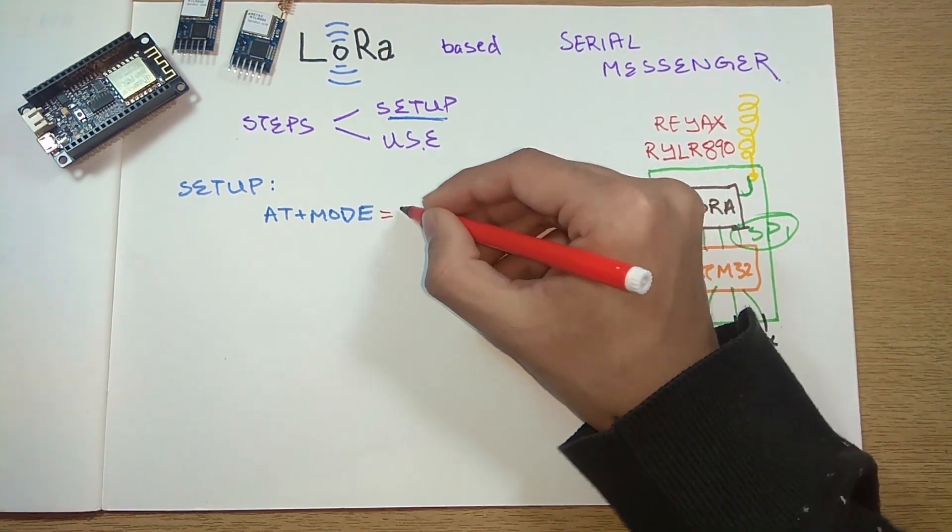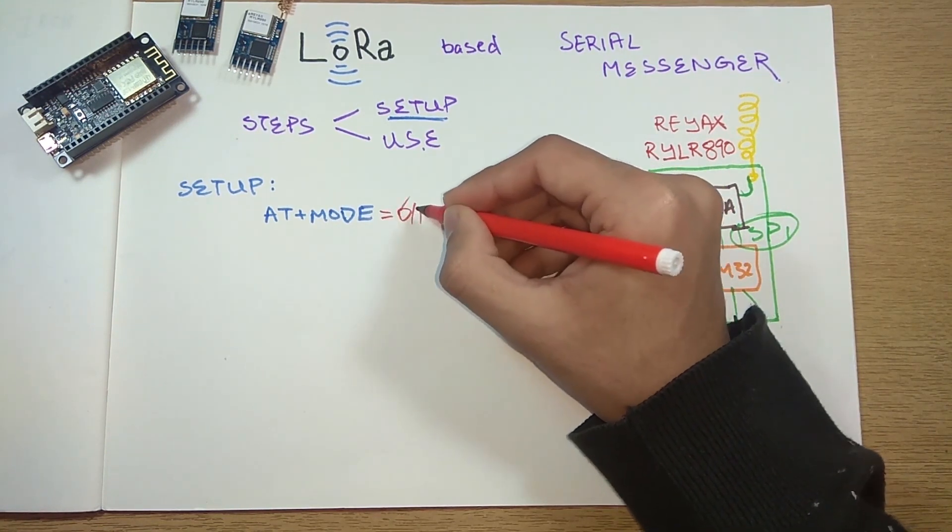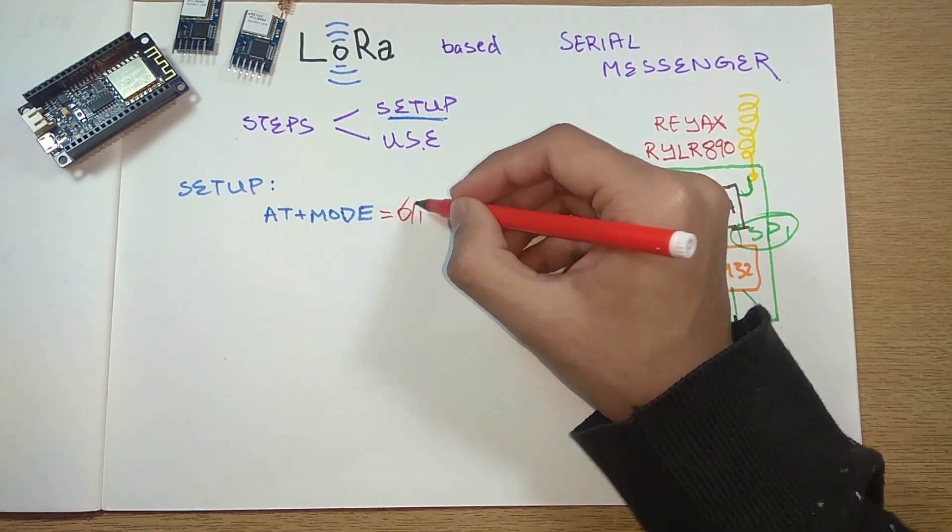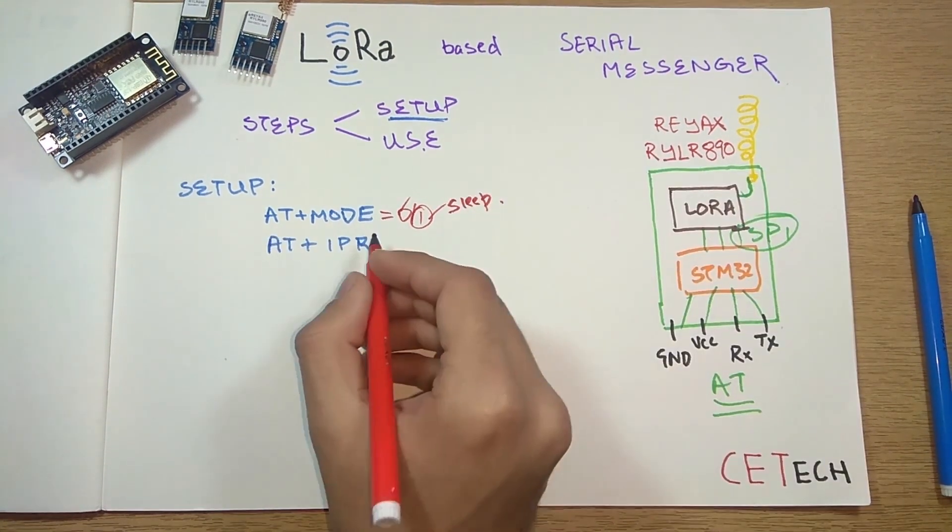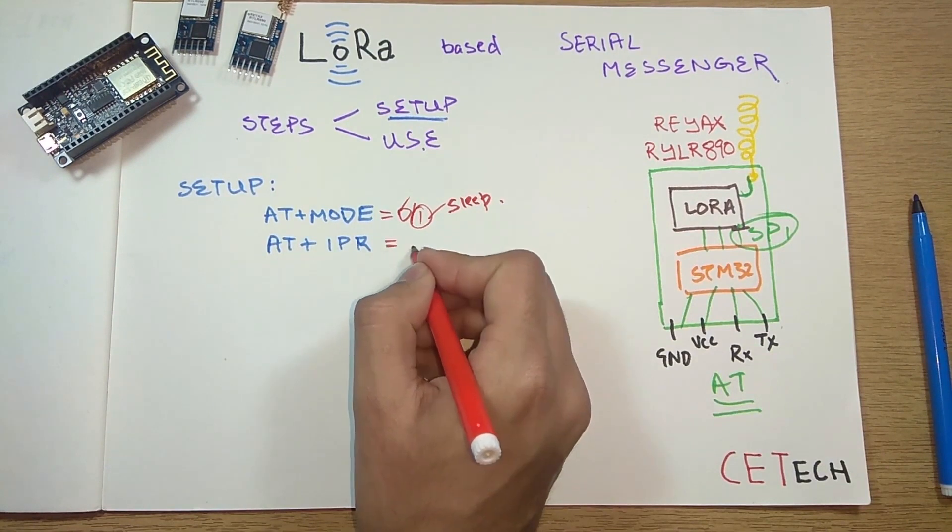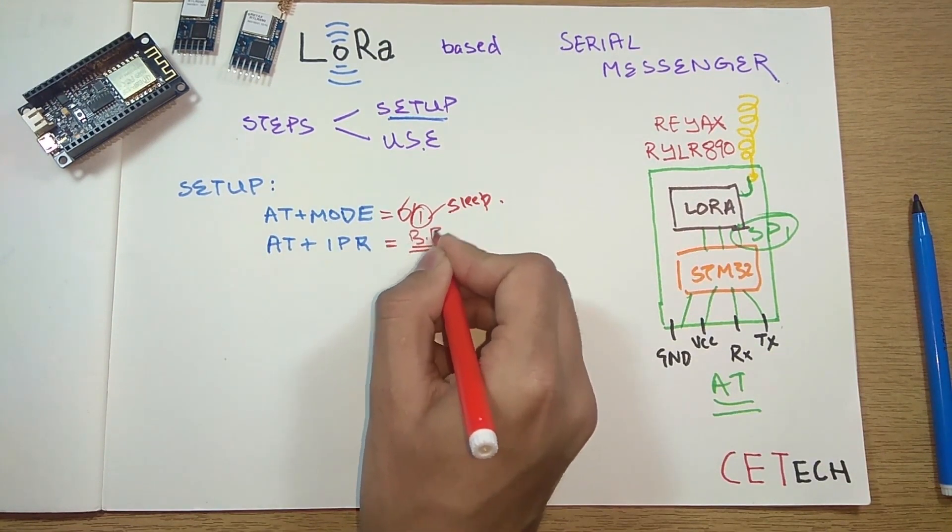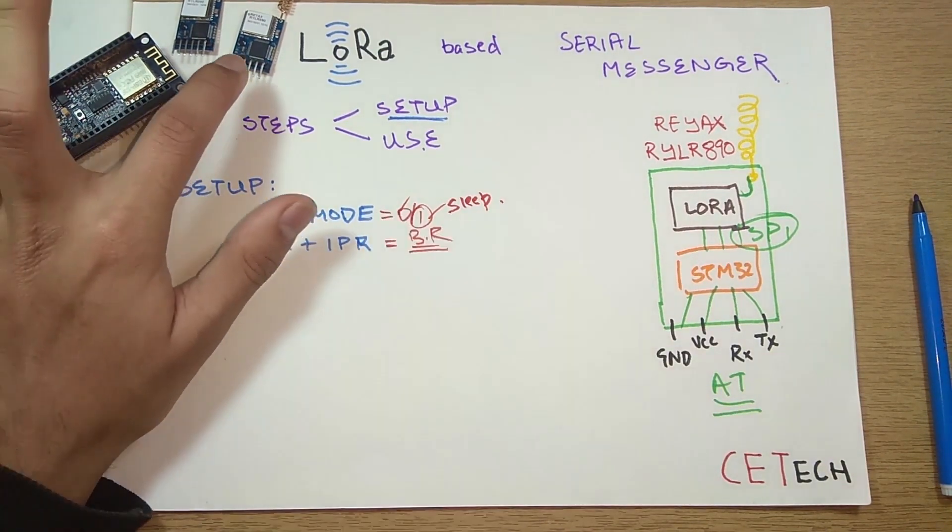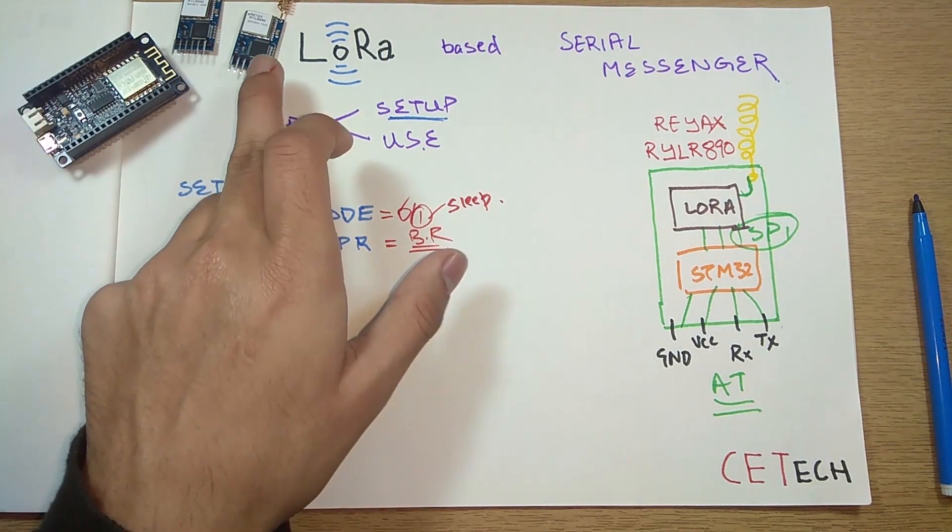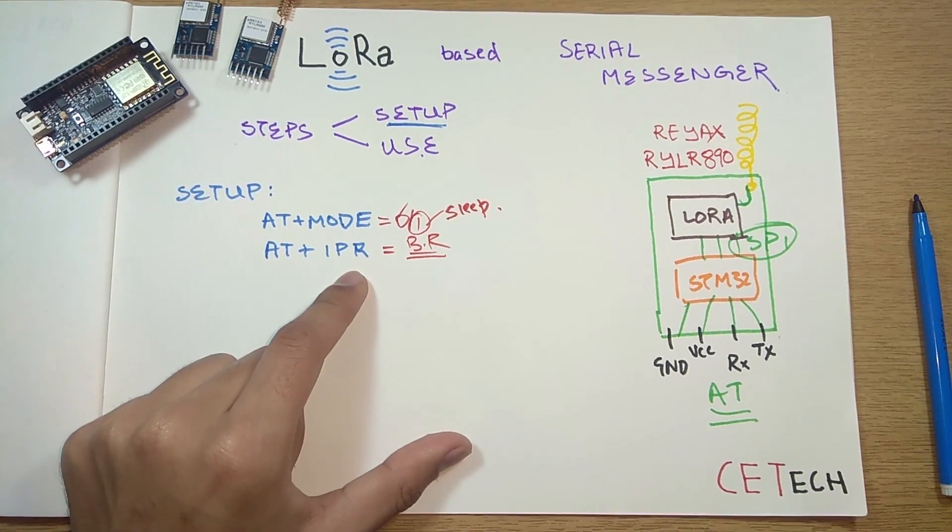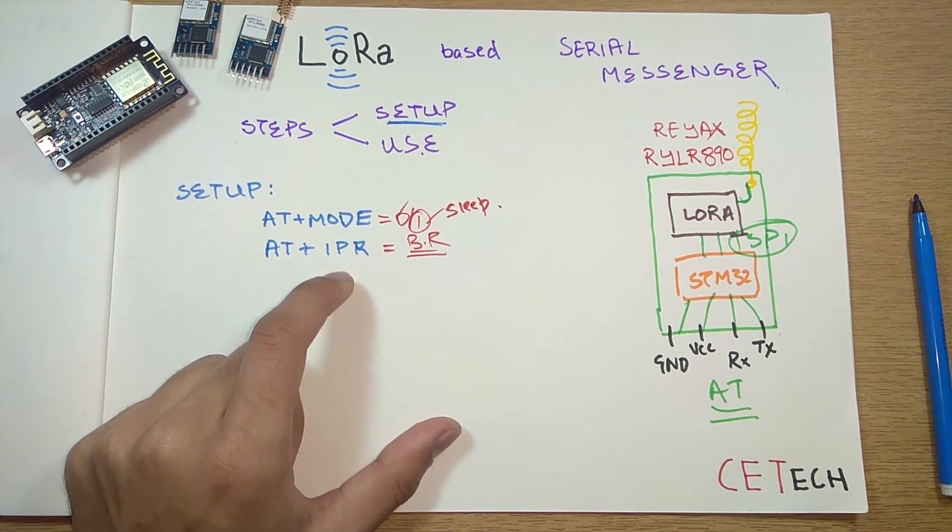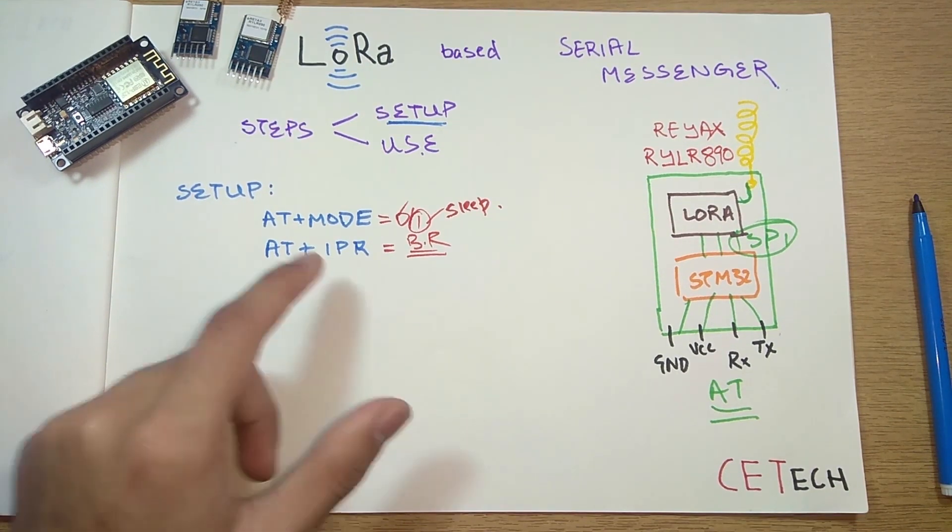The first we'll see is the AT+MODE command. When we set it equal to zero or one, zero will put it into normal transmit or receive mode and one will put it into sleep mode. The second command is AT+IPR, where you can enter the baud rate. The baud rate you'll communicate with the module is set using this. It comes with a default baud rate of 115200, which is good as the ESP is generally used at that baud rate.